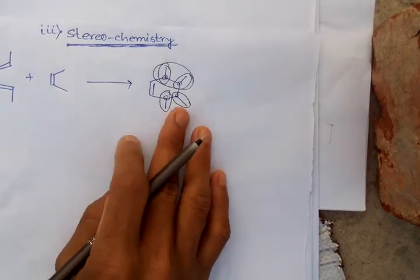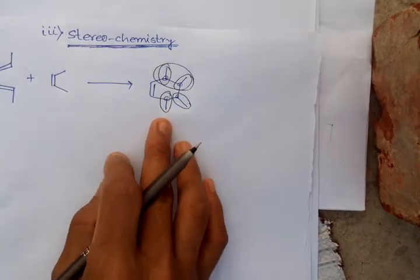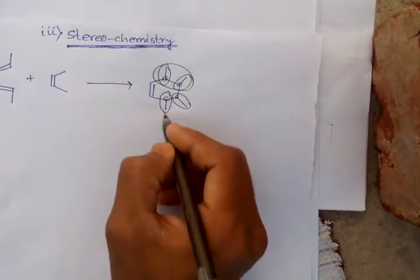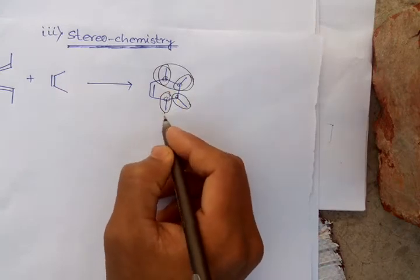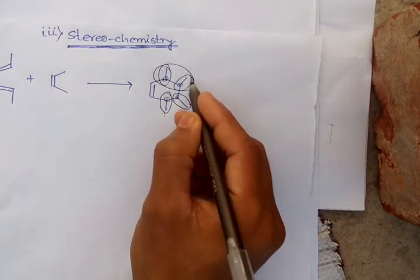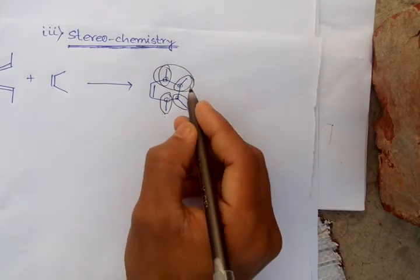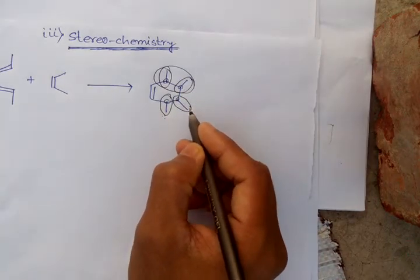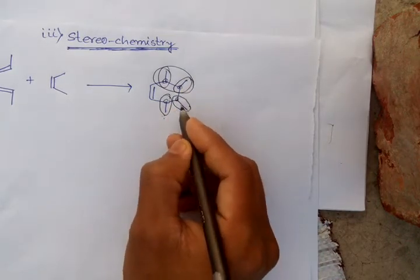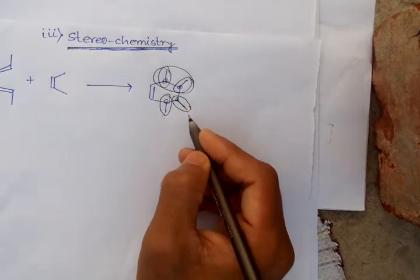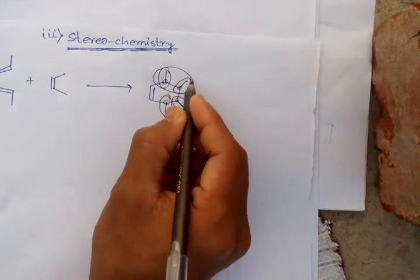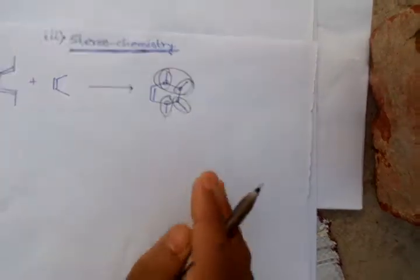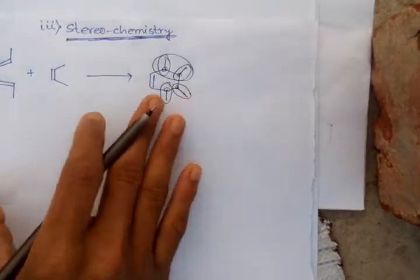So there are totally three possibilities. First one — these are trans over here. Second one — the relation between this one and this one, which is cis face here. And third — the relation between these. So there are totally three possibilities. Now we first discuss its stereochemistry.